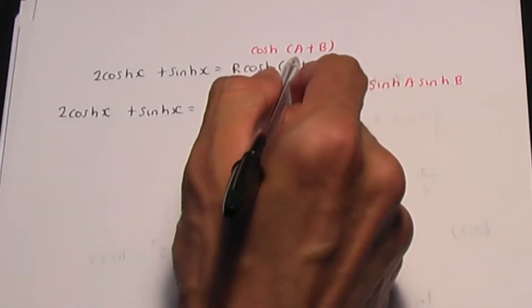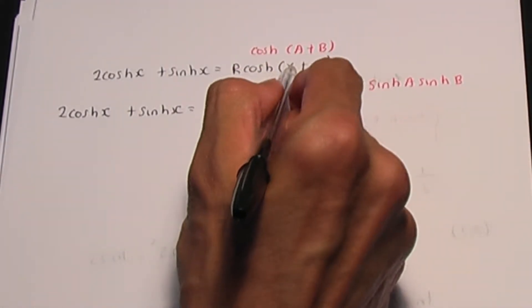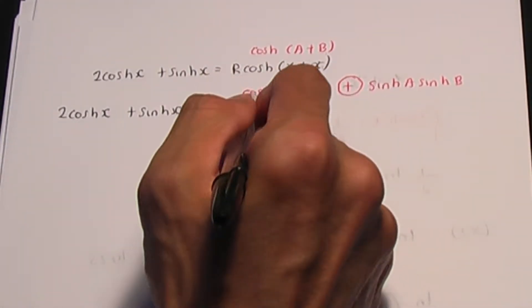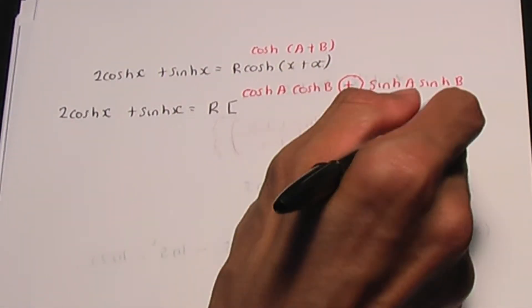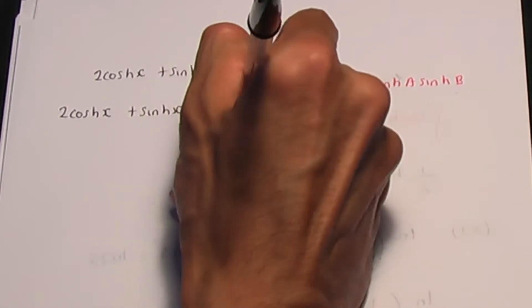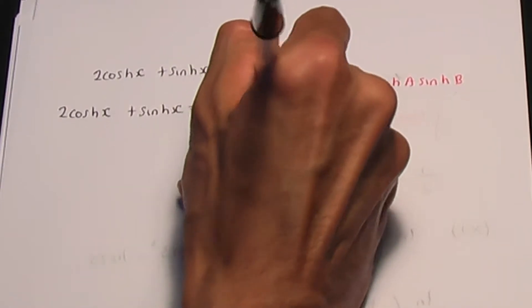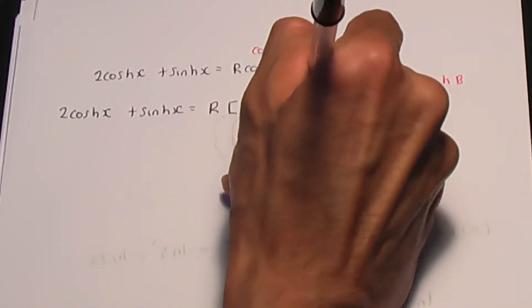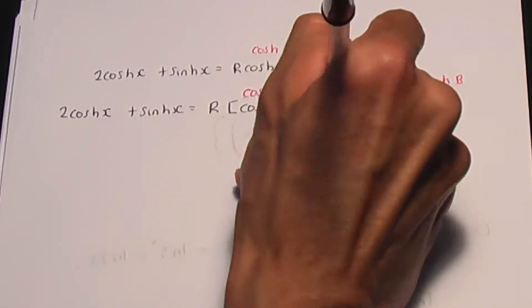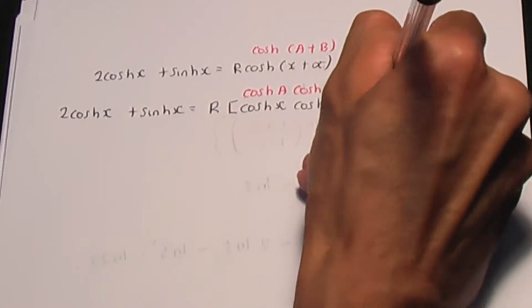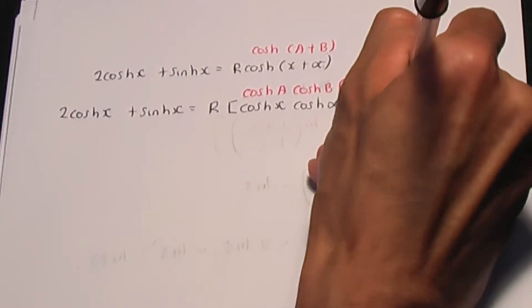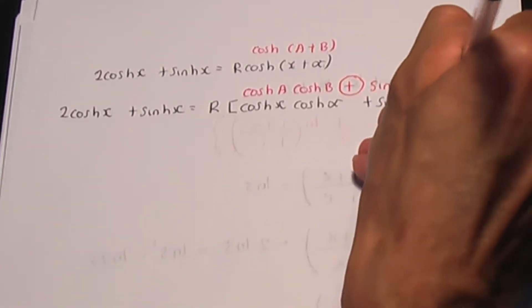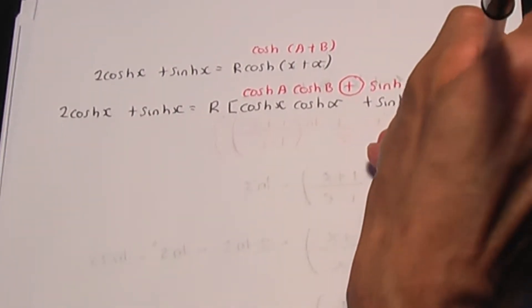Here a is x and b is alpha. Applying this identity gives hyperbolic cos x · hyperbolic cos alpha plus hyperbolic sin x · hyperbolic sin alpha.